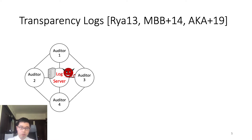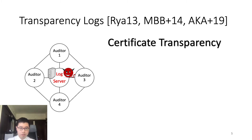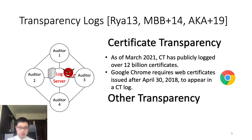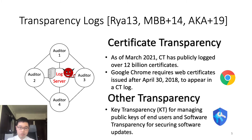To solve this problem, people proposed transparency logs. Transparency logs allow users and auditors to monitor the state and behavior of an untrusted server. There are many adoptions in nowadays systems. The most famous one is certificate transparency, which is used to monitor website certificates. It turns out that certificate transparency can help users detect malicious certificates on the internet. There are also other transparency logs, such as key transparency and software transparency.